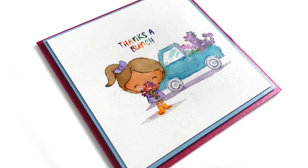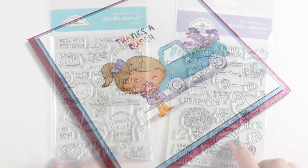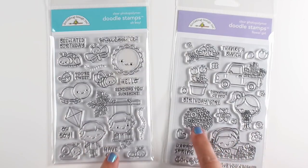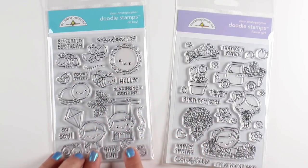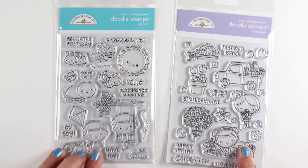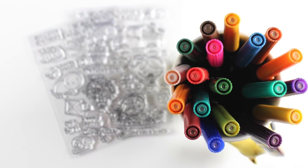And today I'm going to be working with some doodlebug stamps and some Tombow markers. These are water-based markers. The two sets that I bought, there's one with girls, and the girl has a truck, which is pretty awesome. The boy has bugs and sunshine and all kinds of fun things, so there's two sets that I just think are adorable for coloring.